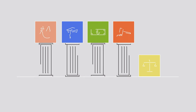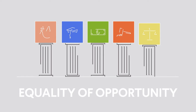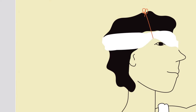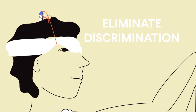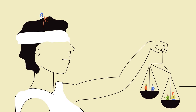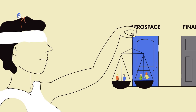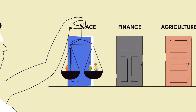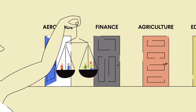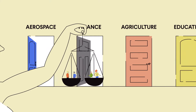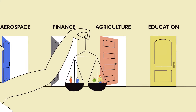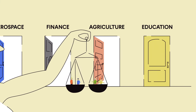Fifth, there needs to be equality of opportunity. If governments eliminate discrimination against women and minorities, ensuring that businesses and the law treat all people equally, they can participate in the markets they want and can work in the jobs they're best suited for, unleashing their full economic potential.